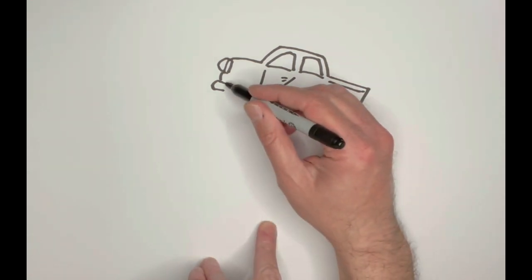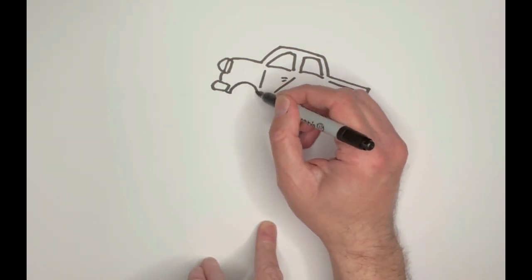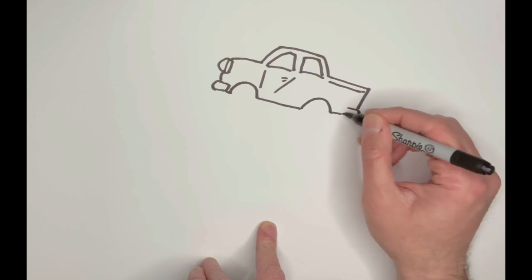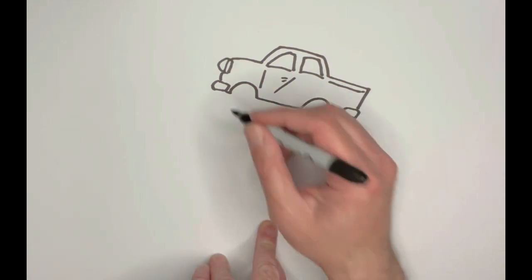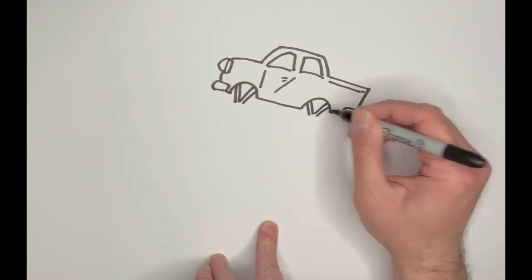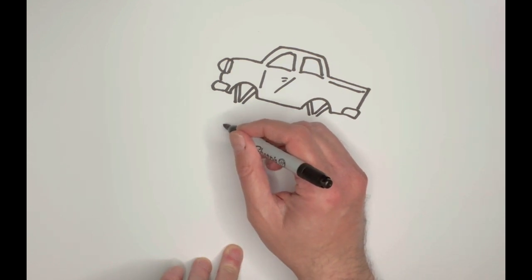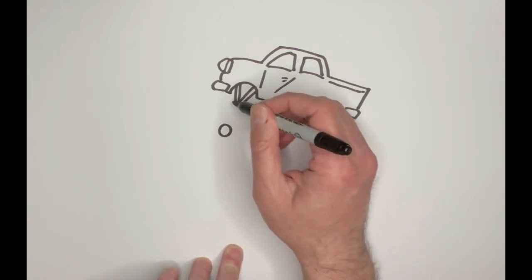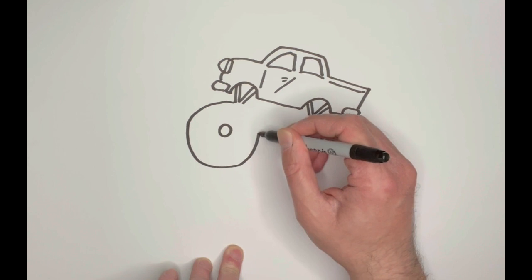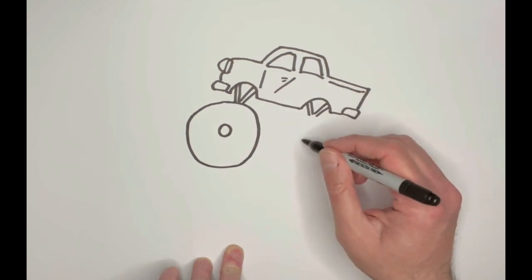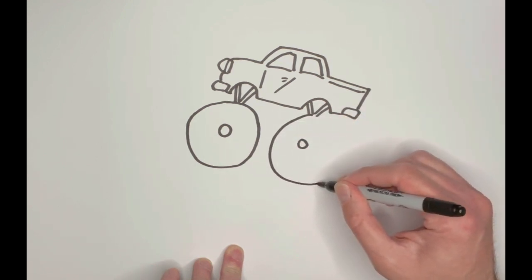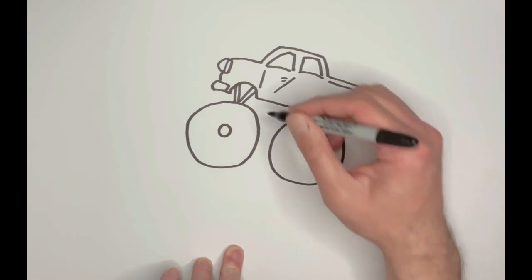But, here's where it starts to get a little wacky. We don't have normal tires on a monster truck. Nope. We have something very different. We have these giant, giant, big, huge, humongous tires. So, I'm going to draw one starting, that's not the tire. I know what you're thinking. It's going to start over here and go all the way around this giant tire. It's so weird. And then this other one here. I'm going to put a little circle around there. And we're going to have another giant tire coming around here. And that's the look of our monster truck.